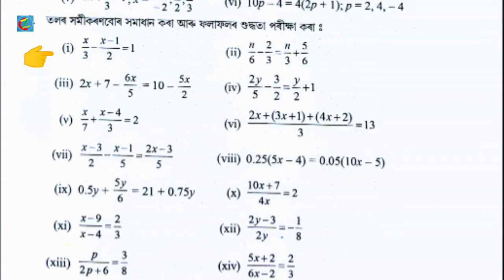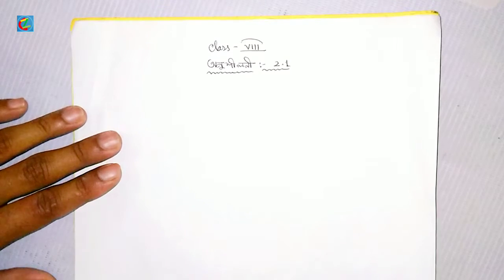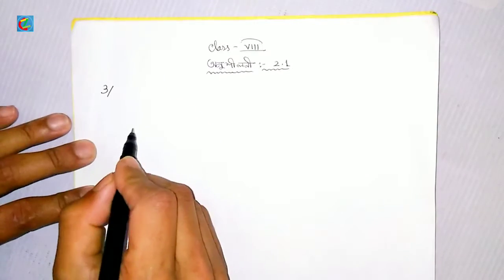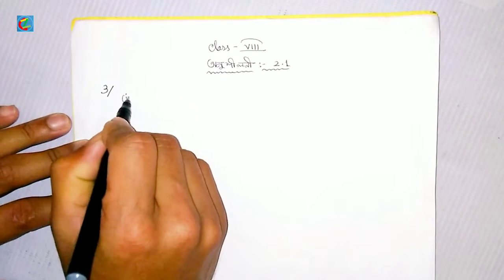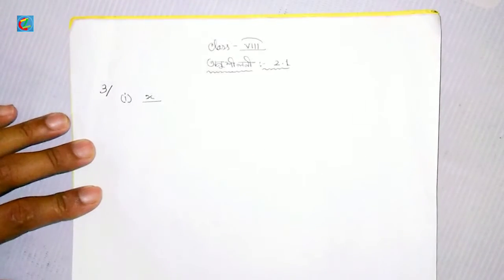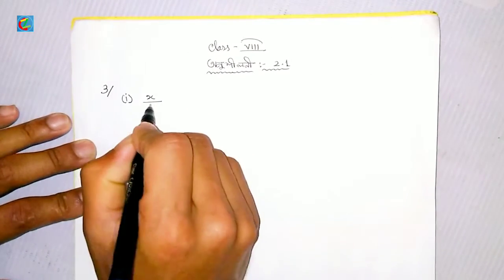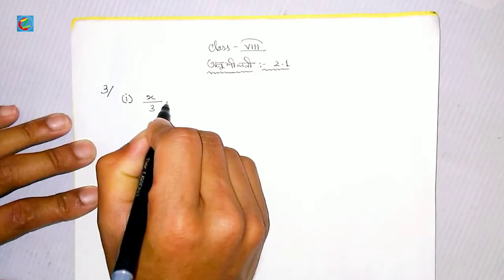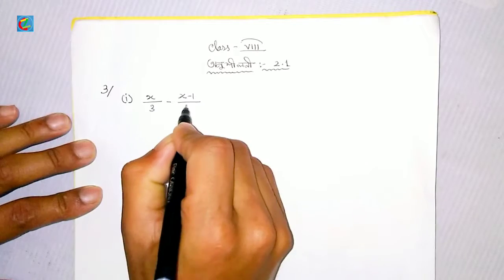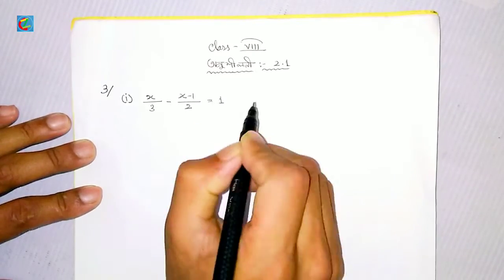We need to use x divided by 3 minus x minus 1 divided by 2 is equal to 1. So x is equal to 1. X divided by 3 minus x minus 1 divided by 2 is equal to 1.